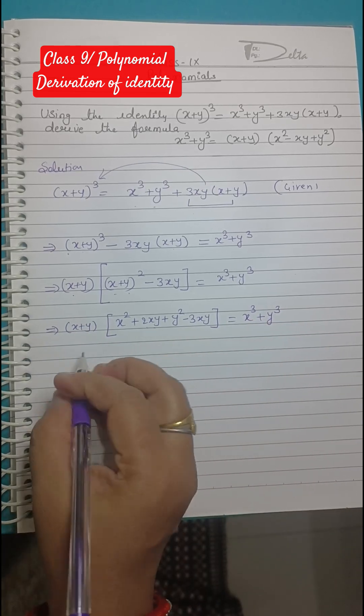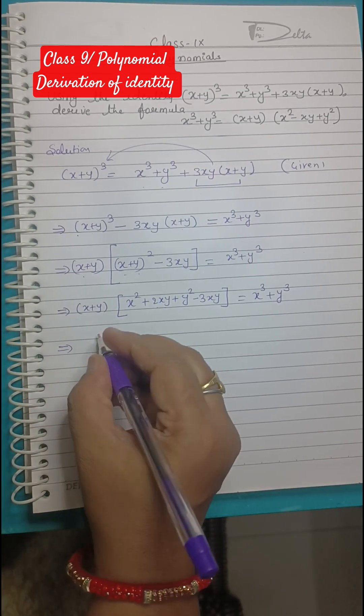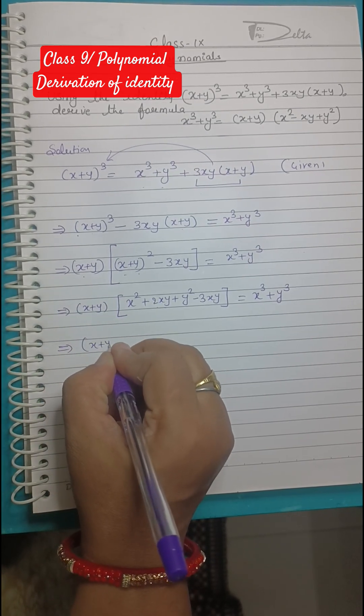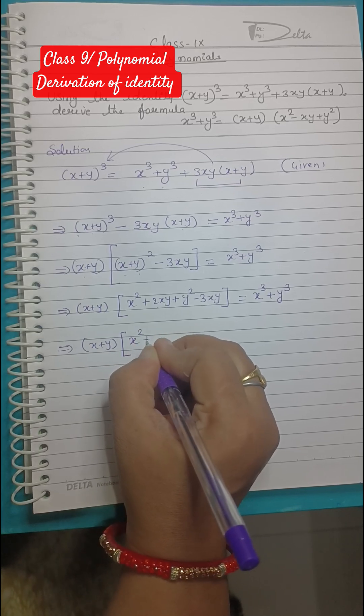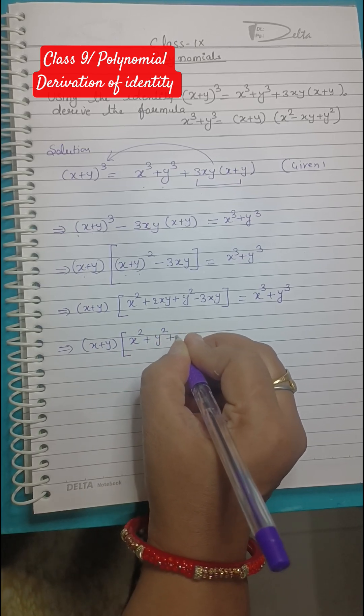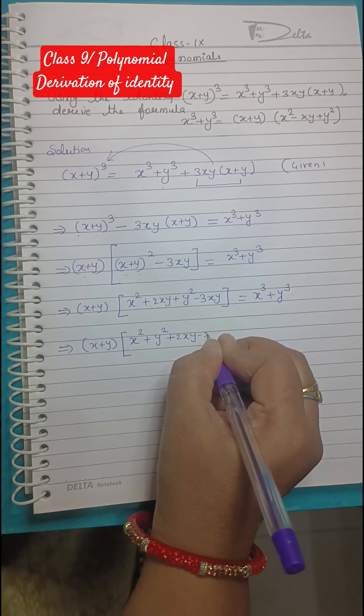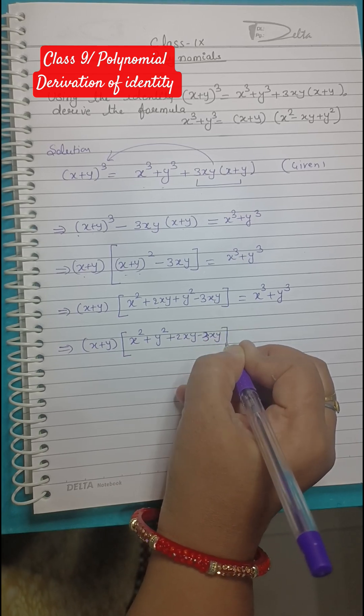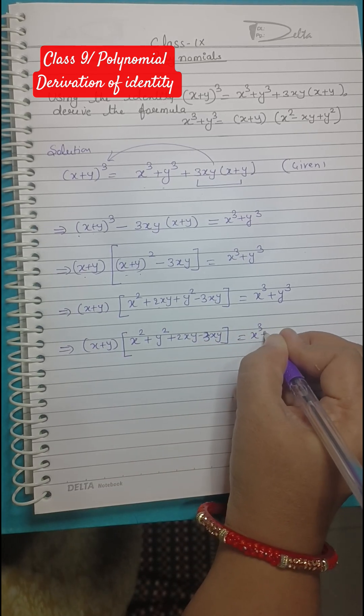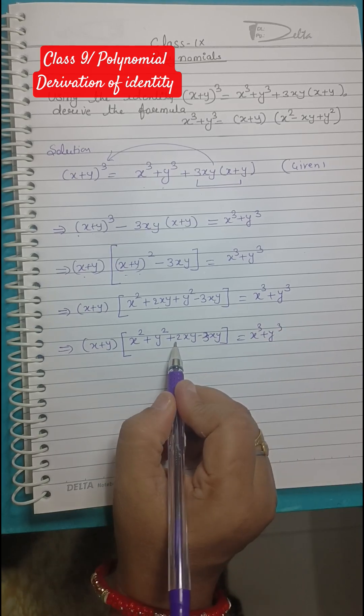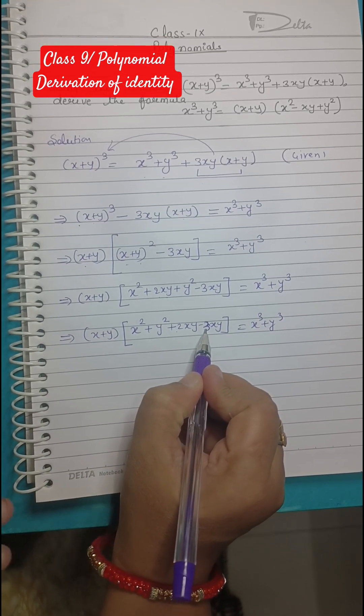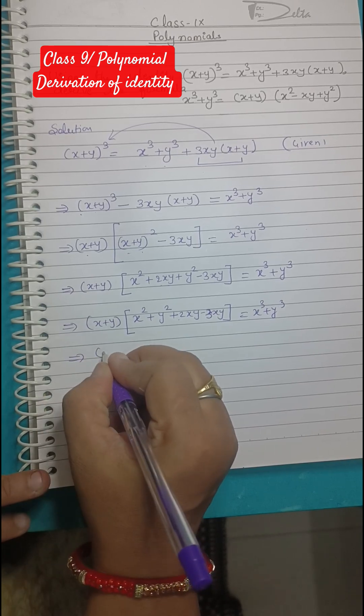Rearrange the like terms in the big bracket. What you are going to get? (x+y) outside the bracket, then inside the big bracket x² + y² + 2xy - 3xy = x³ + y³. Now 2 minus 3, it will leave only -xy. So (x+y)(x² + y² - xy) = x³ + y³.